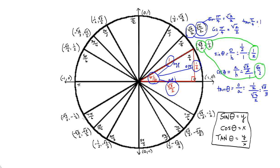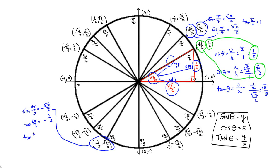Let's do one that isn't in quadrant 1 — how about 4 pi over 3, way down here. The sine of 4 pi over 3 is my y coordinate, which is negative radical 3 over 2. The cosine of 4 pi over 3 is my x coordinate, which is negative 1 half. And the tangent of 4 pi over 3 is y over x — that would be negative radical 3 over 2 divided by negative 1 half — and you should get radical 3 as an answer.